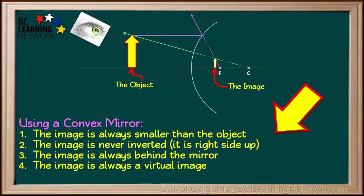In review, these four descriptions are true for all images formed by a convex mirror. The image is always smaller than the object. It is always right side up. It is always behind the mirror. And it's always a virtual, rather than a real image.